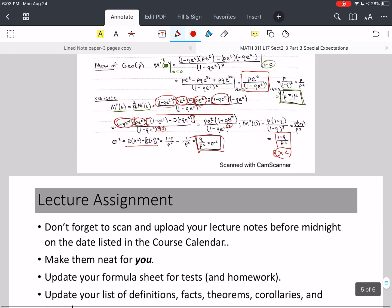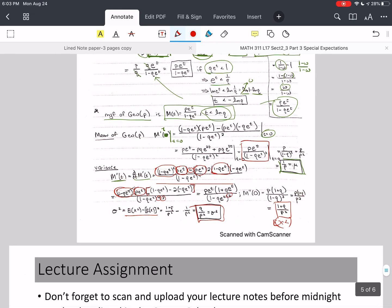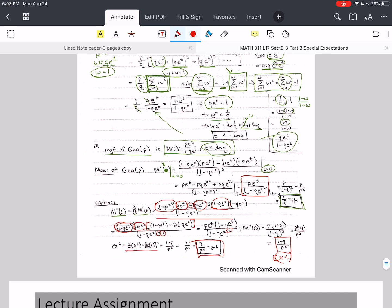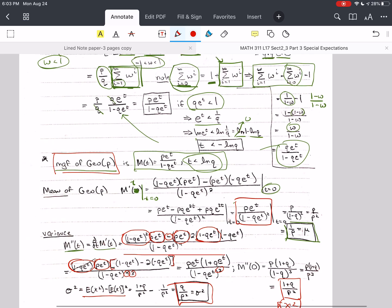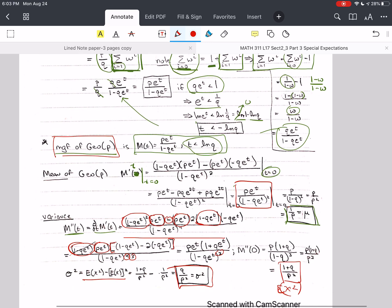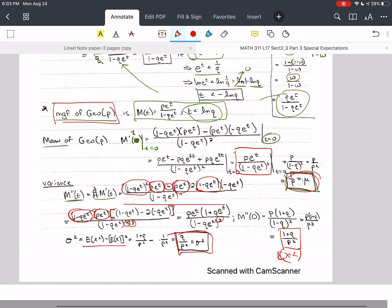So you'll want to update your list of distributions. With the geometric distribution on that page, you'll want to put the MGF. You'll want to put the mean, which is right here. And you'll want to put the variance, which is here.